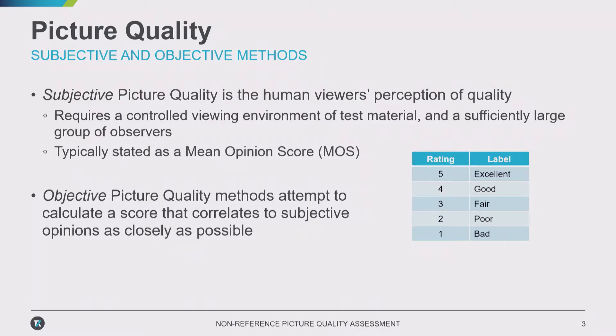Picture quality can be considered using a couple of different methods. Subjective picture quality, as implied by the name, is basically our human perception of how good the video is. Typically, subjective scoring is done by getting a sufficiently large group — maybe a couple of dozen people — in a controlled environment to view some test material and give their opinion on what the score is.